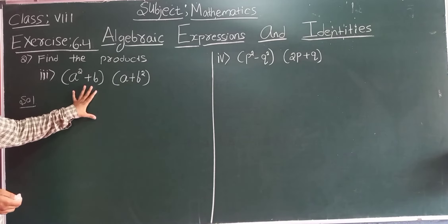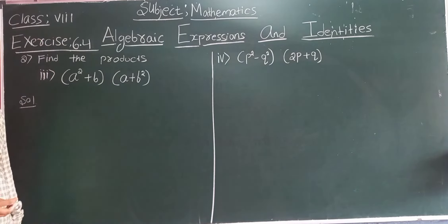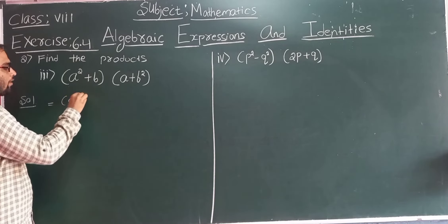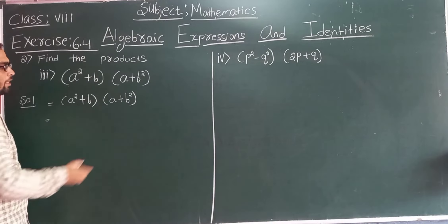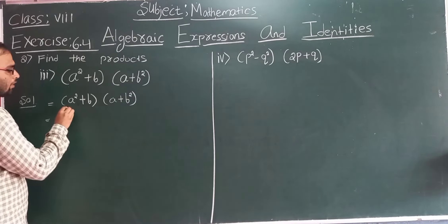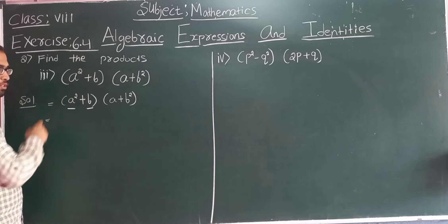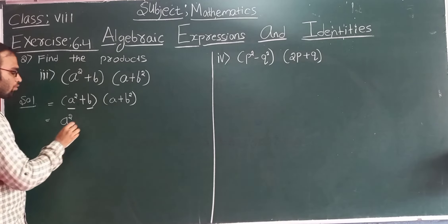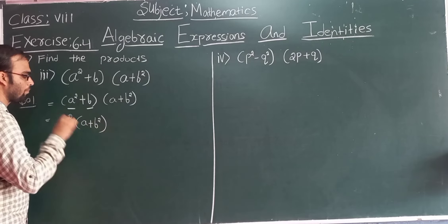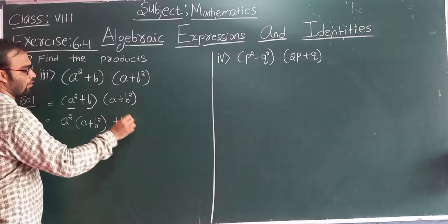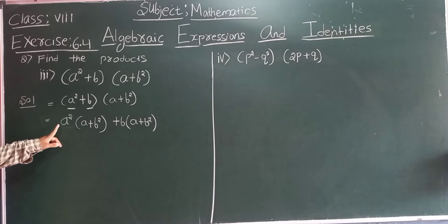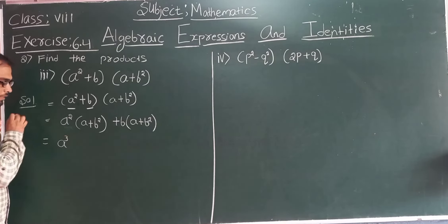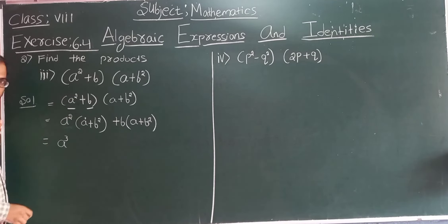Now we solve the third question: (a squared plus b) into (a plus b squared). Write it as (a squared plus b) into (a plus b squared). I will keep (a plus b squared) as it is and divide the first binomial into two parts: a squared and b. Write a squared into (a plus b squared), then b into (a plus b squared). Now multiply: a squared into a gives a to the power 3, and a squared into b squared gives a squared b squared.